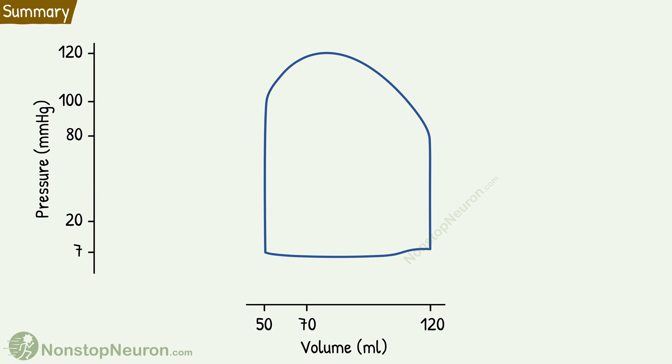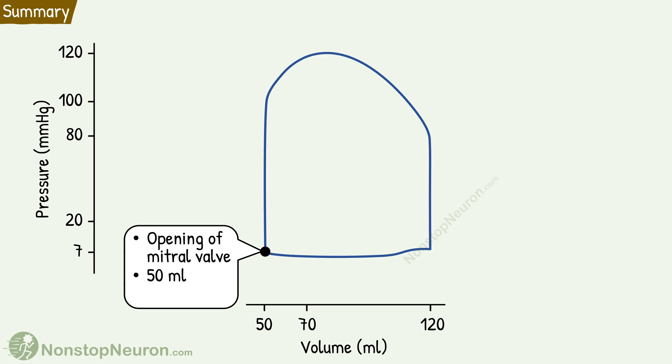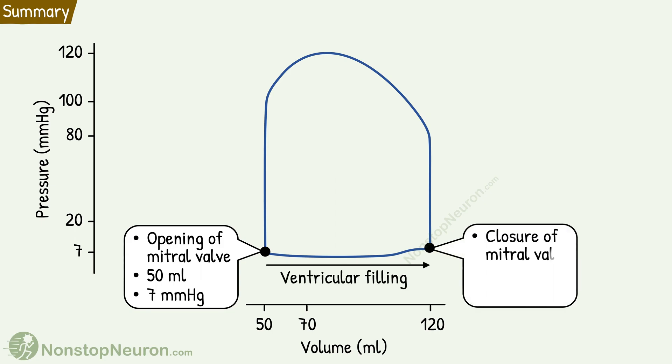Now let's have a quick summary. At the time of opening of the mitral valve, the ventricular volume is about 50 ml and pressure is about 7 mmHg. This is followed by ventricular filling which ends at the closure of the mitral valve. At this point, the volume has increased and reached the end diastolic volume of about 120 ml. During filling, initially there is a slight fall in pressure and later a slight rise, ending at about 10 mmHg.